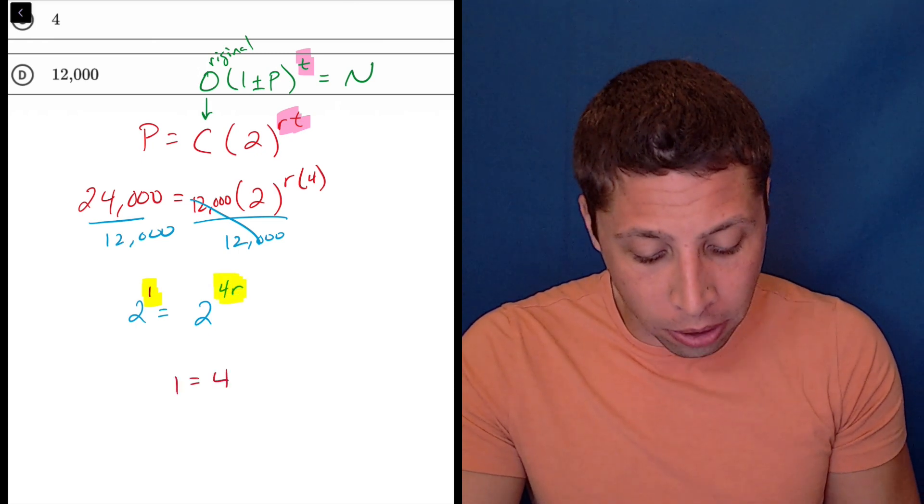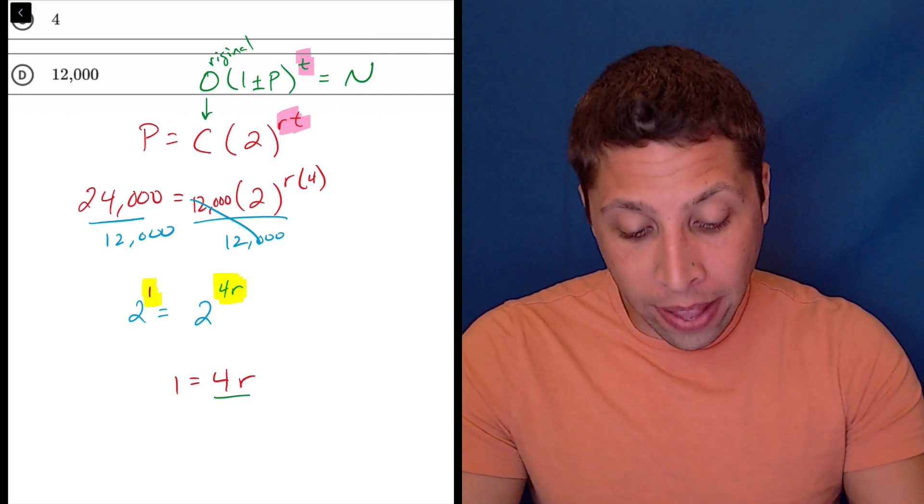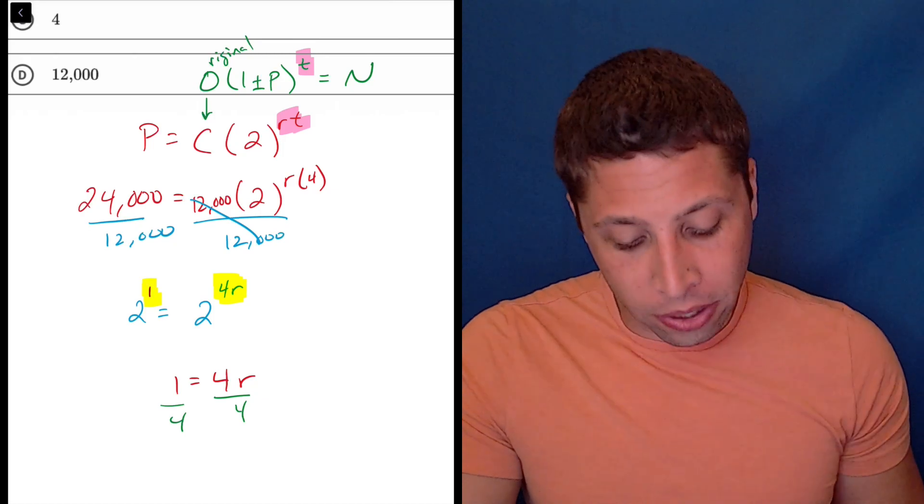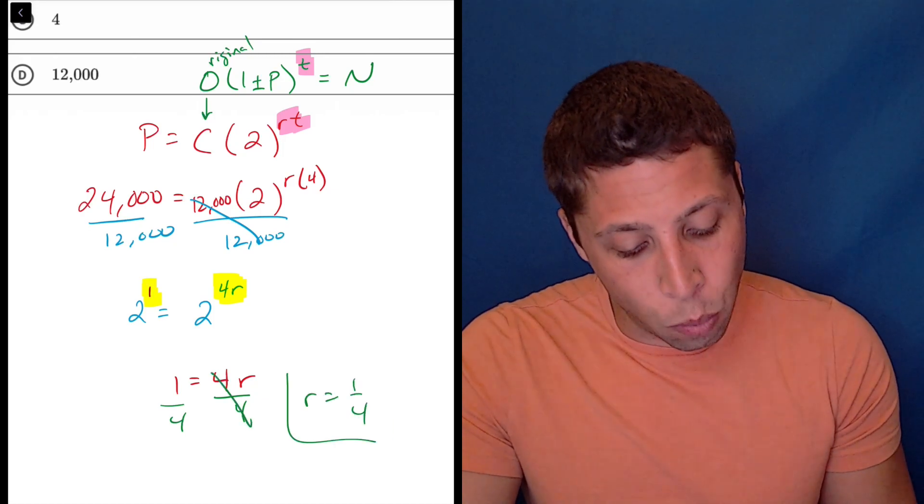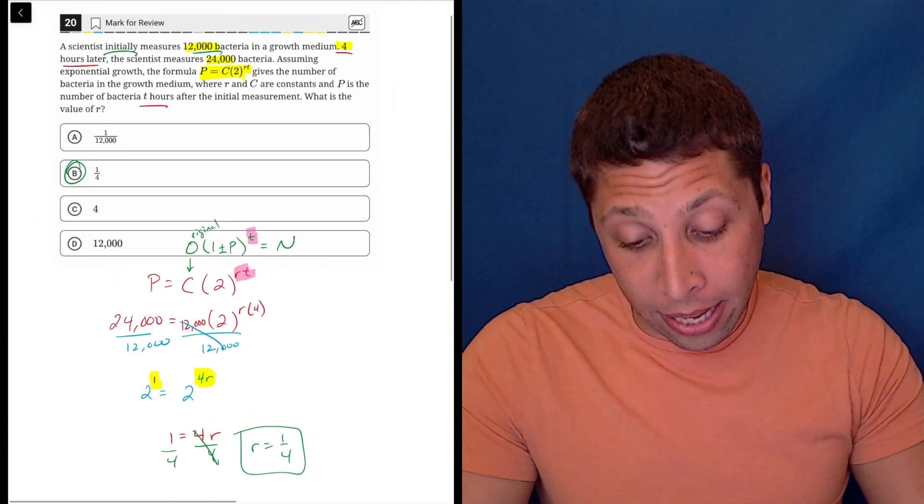So now I have a smaller, easier equation: 1 equals 4R. I can solve that by dividing both sides by 4, and now you can see that R is 1/4, and that is choice B, and that is the answer.